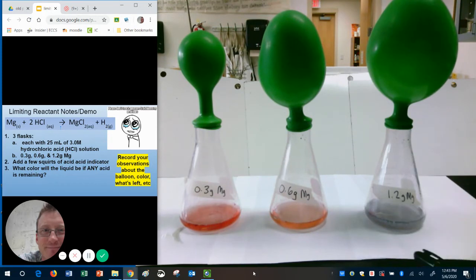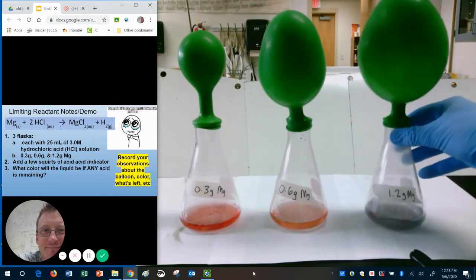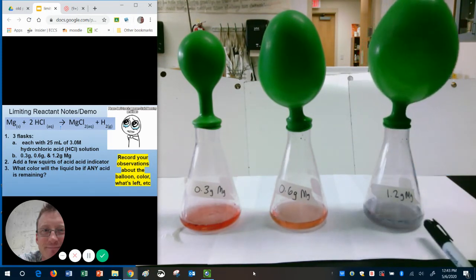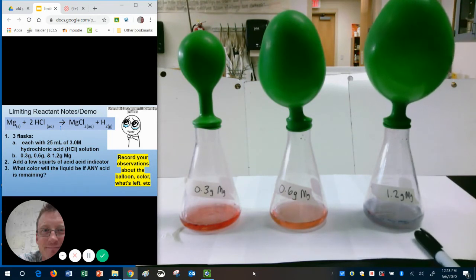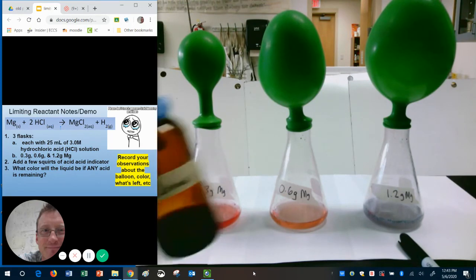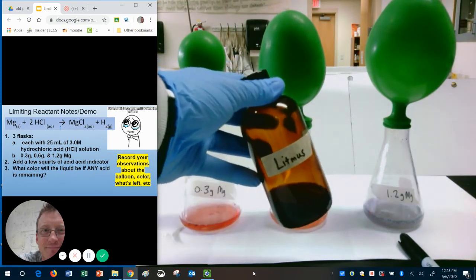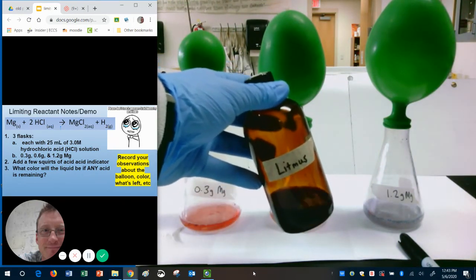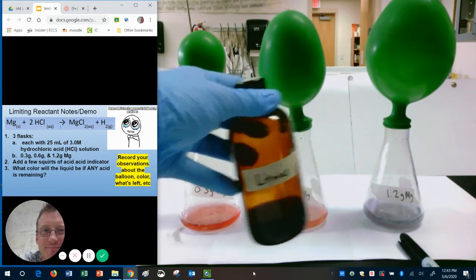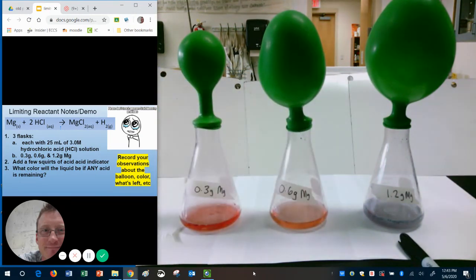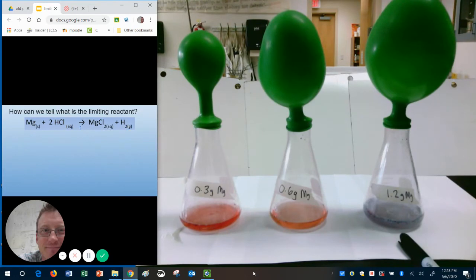Well, this last one here has kind of a purplish hue to it. It's totally changed color. Well, what does that mean? That means all of the acid has been used up. That litmus, when we added the litmus, when it has no acid to come in contact with, it has that purplish color.